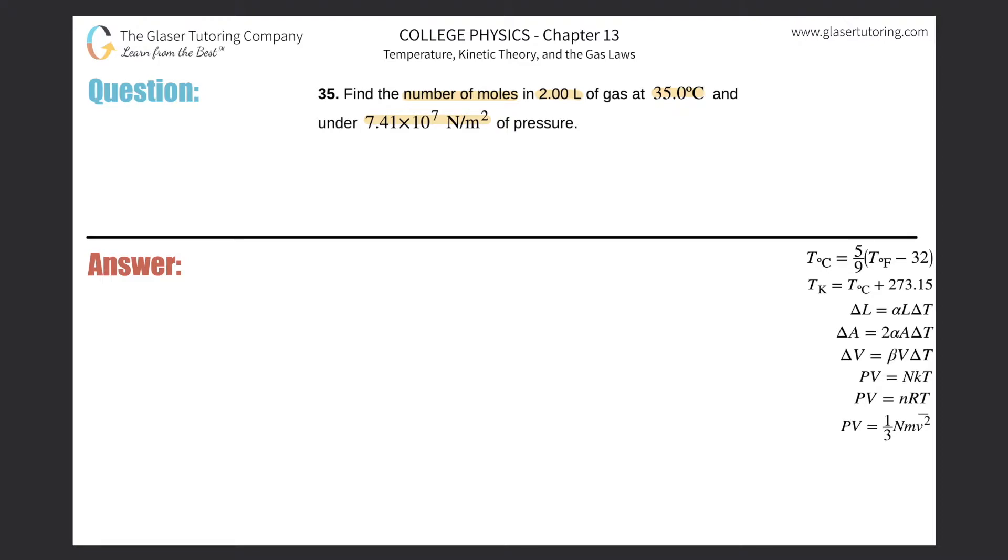So PV = nRT. I discussed this formula in a general video on ideal gas laws - take a look in the description below for a link. I'm just going to approach this problem now since I've described all the basics in that video.